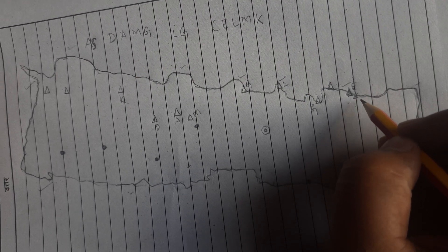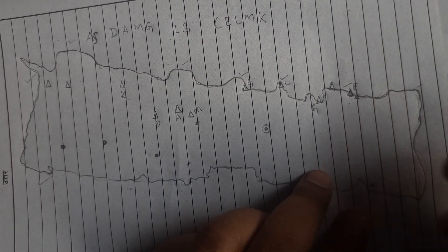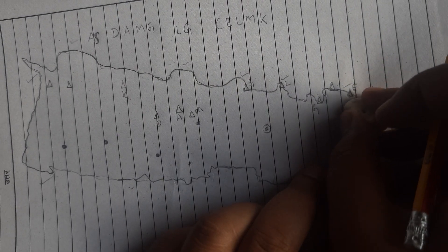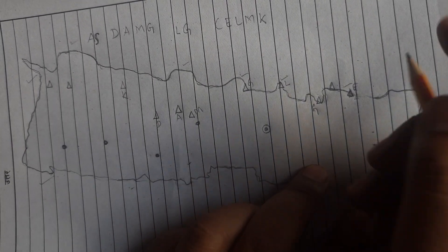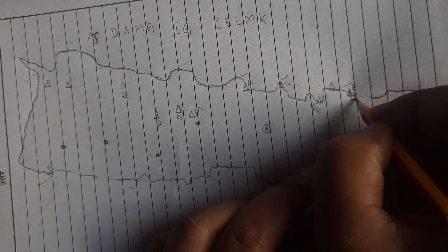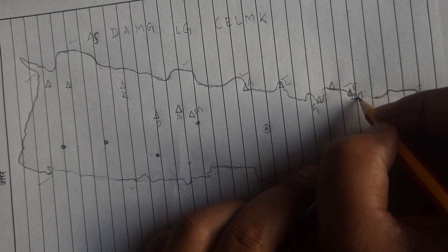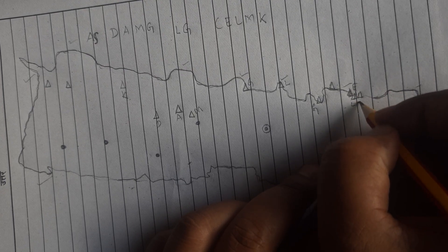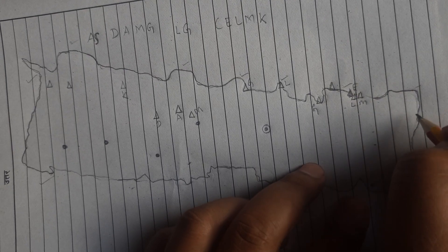Lhotse, Makalu Barun, then Lhotse. And we call the E, L, M, K.